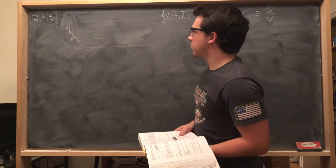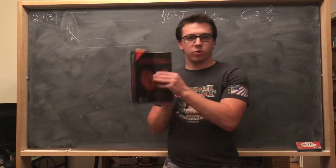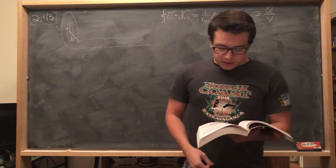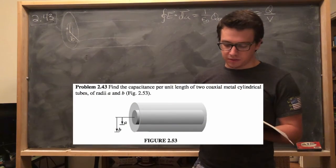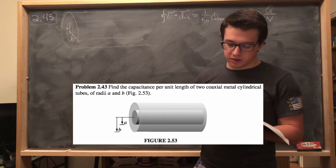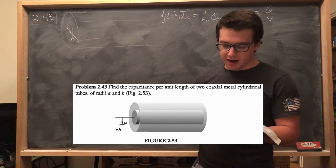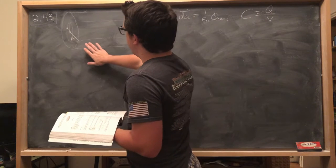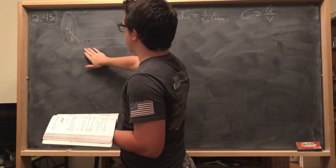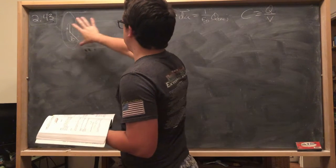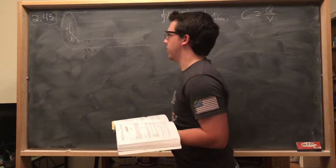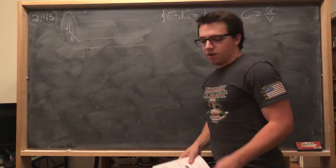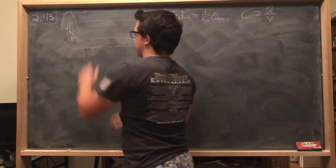We are going to be doing problem 2.43 in Griffith's E&M, and this problem asks us to find the capacitance per unit length of two coaxial metal cylindrical tubes of radii A and B. So that looks like this. Imagine we have a cylinder of radius A, a cylinder outside of it, and they are of radius B. They're coaxial, and they're both made of metal, so they're conductors. And what we want to do is find the capacitance of this setup.